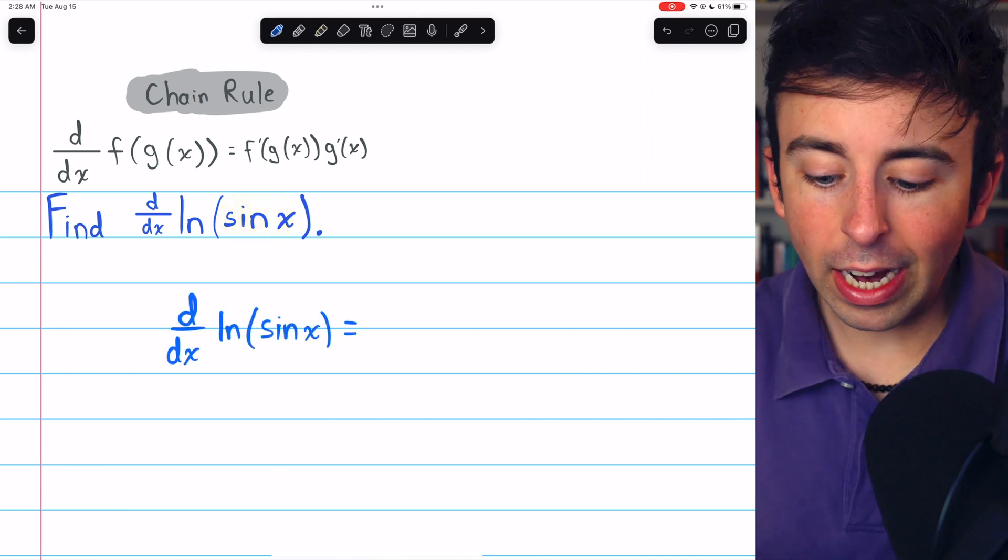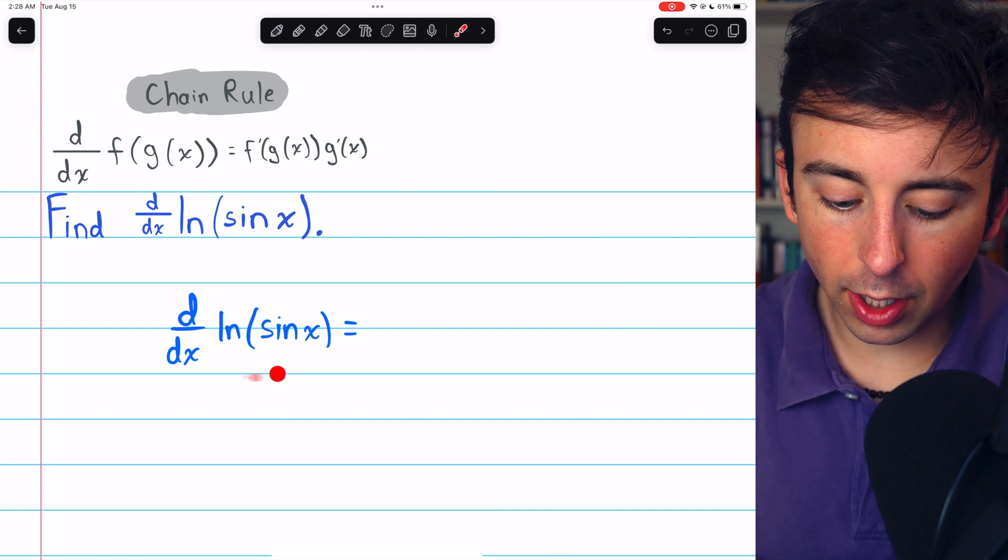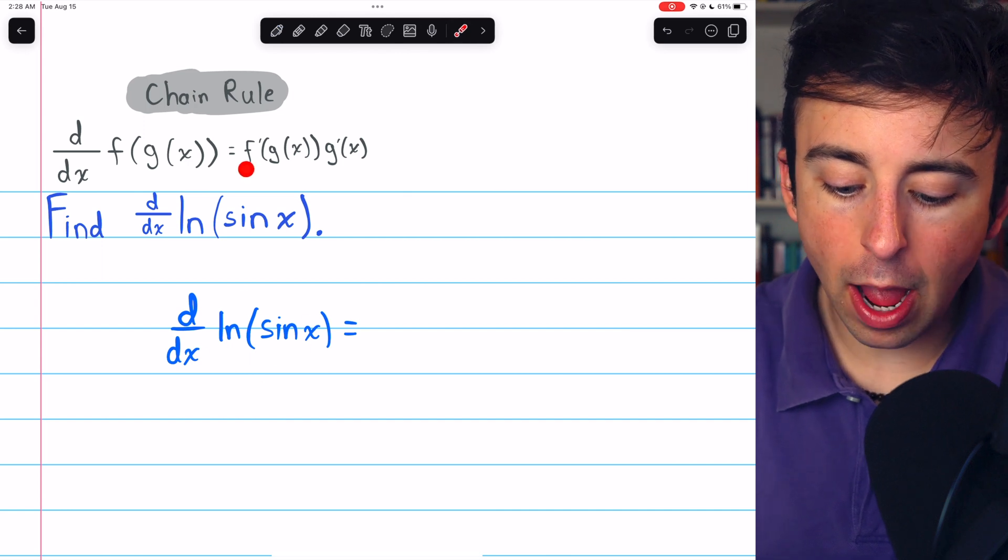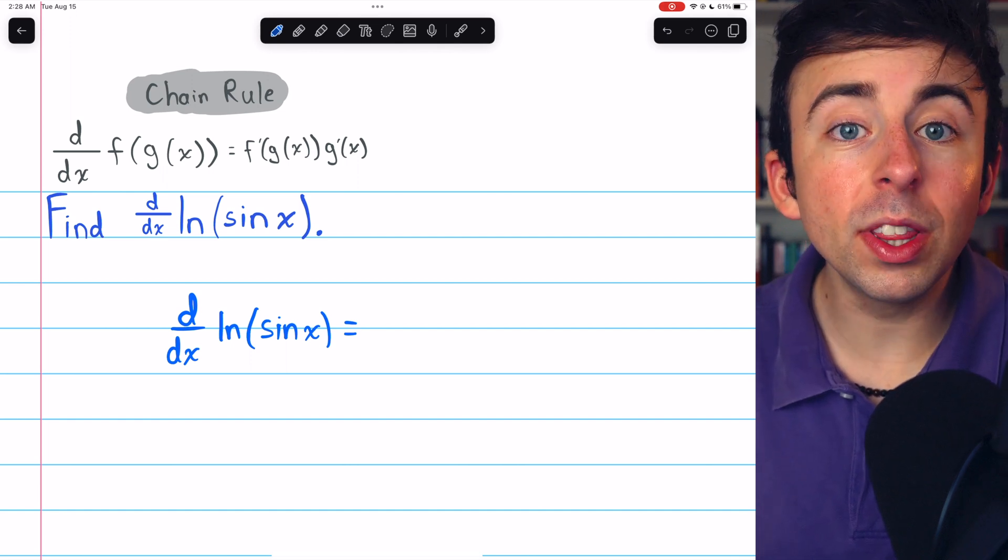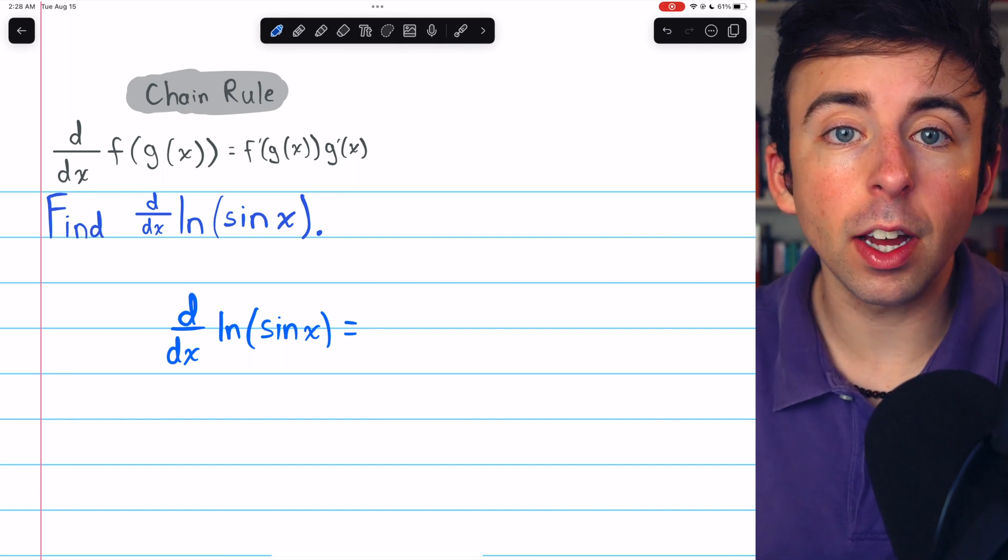Let's apply the chain rule. By the chain rule, the derivative will begin with f prime of g of x. That's the derivative of the outside function with the inside function left unchanged.